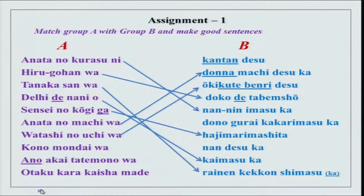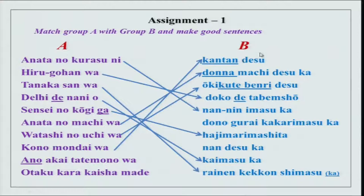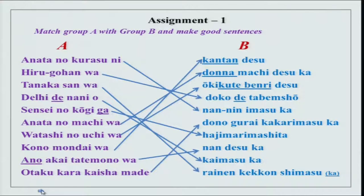'Watashi no uchi wa ookikute benri desu.' When you join i-adjectives with na-adjectives, the first adjective will change — the i-adjective changes to kute, plus benri. 'Kono mondai wa kantan desu' or 'Kono mondai wa kantan na mondai desu.' The moment you use na, the noun follows. 'Ano akai tatemono wa nan desu ka?' — Ano is used because both speaker and listener know the subject. 'Otaku kara kaisha made donogurai kakarimasu ka?' means approximately how much. I hope you did it correctly.